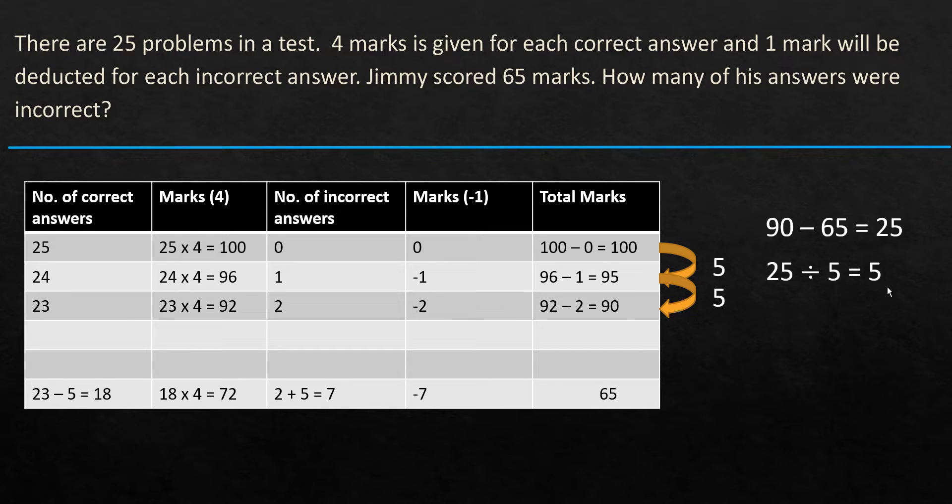So now 23 minus 5, that gives us 18. That is the number of correct answers. And 18 times 4 is equal to 72, the marks obtained because of that. And incorrect answers, it increased by 5. So 2 plus 5 equals 7. And because of the 7 incorrect answers, the mark is reduced by 7, so minus 7. 72 minus 7 gives 65.